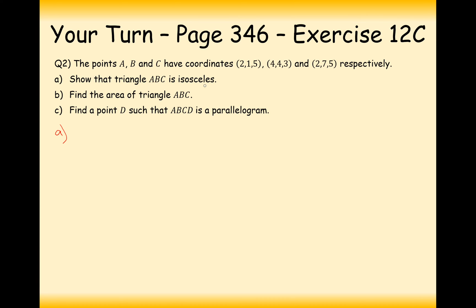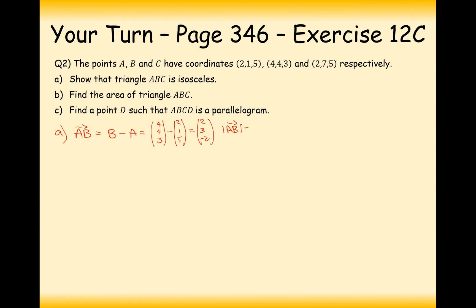To show that a triangle is isosceles, two of the lengths must be equal to each other. The vector from A to B is B take away A: that's 4, 4, 3 minus 2, 1, 5, which equals 2, 3, minus 2. The modulus of AB equals the square root of 2 squared plus 3 squared plus 2 squared, which gives the square root of 17.